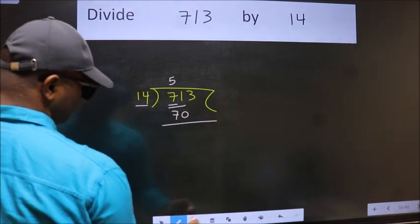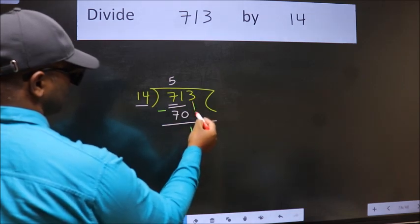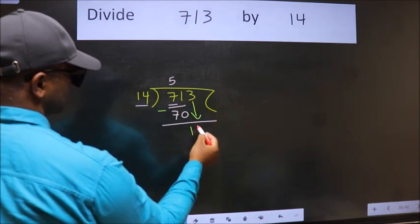Now we should subtract. We get 1. After this, bring down the beside number. So 3 down.